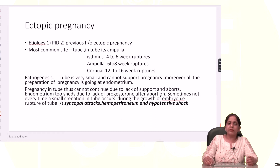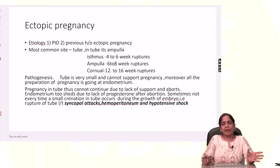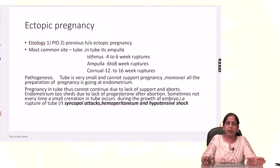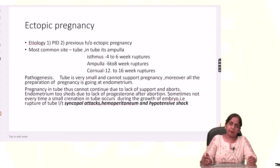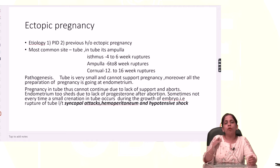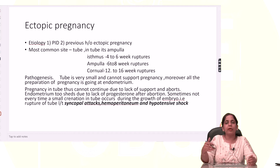Let's see what ectopic pregnancy is. Usually, fertilization occurs in the ampulla of the tube, and the zygote implants in the uterus. Now, if due to some factors this zygote does not move from the tube to the uterus and implants where it is, that is called ectopic pregnancy.